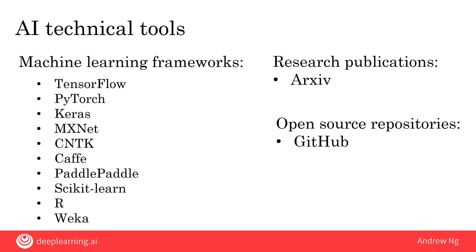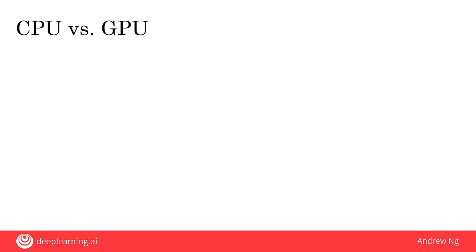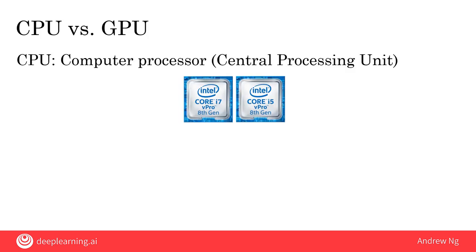In addition to these open source technical tools, you often also hear AI engineers talk about CPUs and GPUs. A CPU is the computer processor in your computer, whether it's your desktop, your laptop, or a compute server off in the cloud. CPU stands for central processing unit, and CPUs are made by Intel and AMD and a few other companies. This does a lot of the computation in your computer.